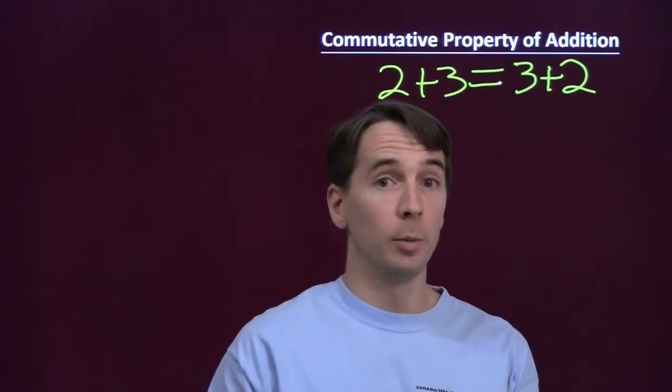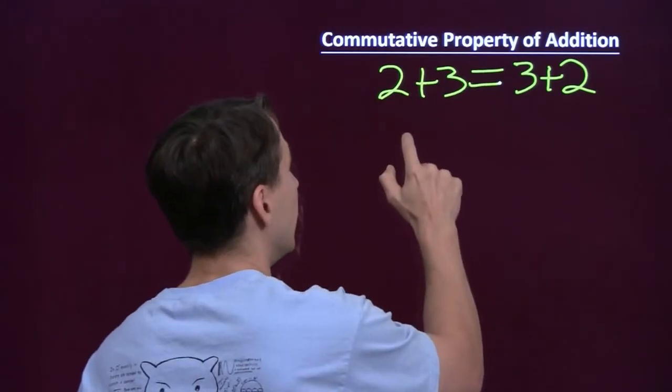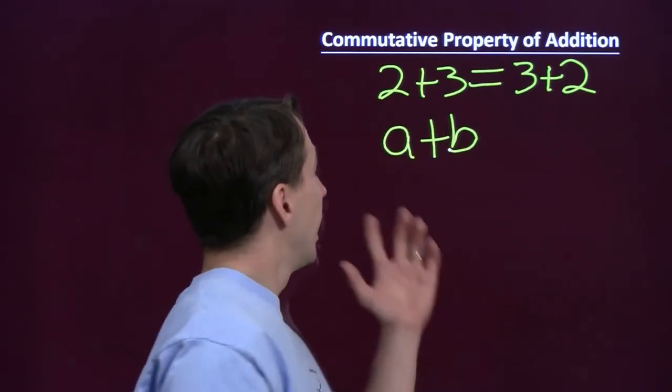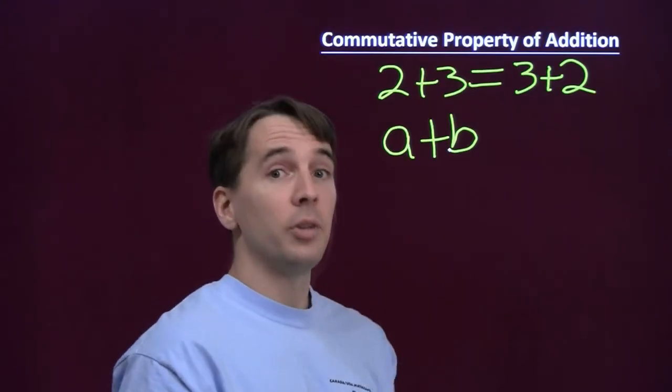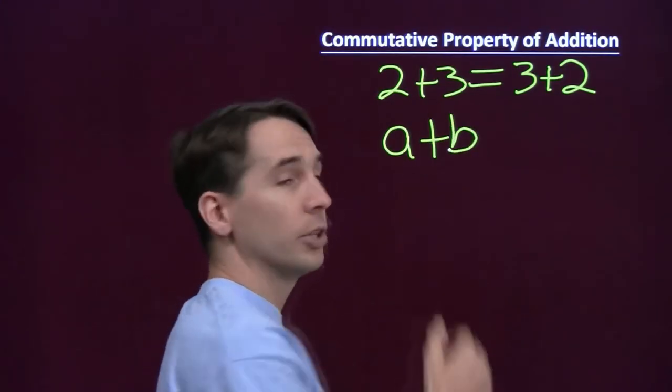And to do that, I'm going to use variables. And a variable is a letter that stands for a number. So I'm going to write A plus B. And each of these letters is a variable that stands for some number. And we can choose whatever number we want to put in there, like 2 and 3.